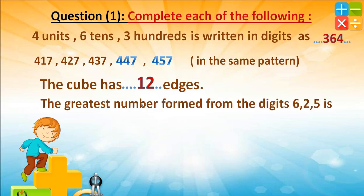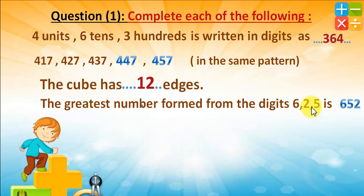The greatest number formed from the digits 6, 2, and 4 is — pay attention — the greatest number. 652. When forming the greatest number from a set of digits, find the largest digit — here it's 6 — put it in the hundreds place, then arrange the rest descending: 5, then 2.